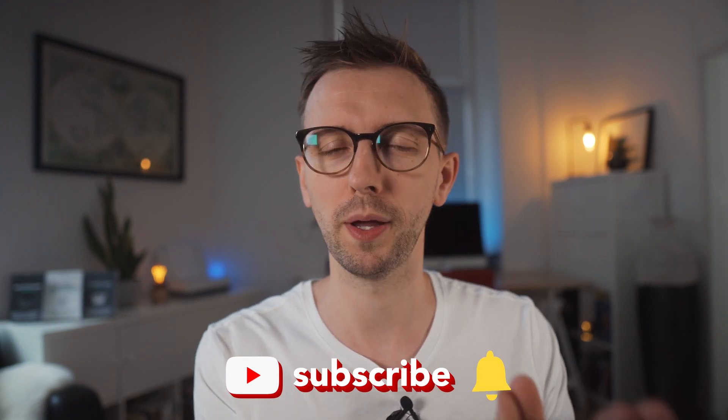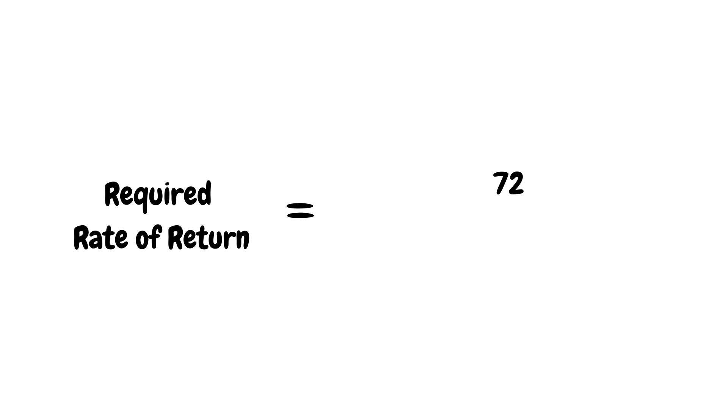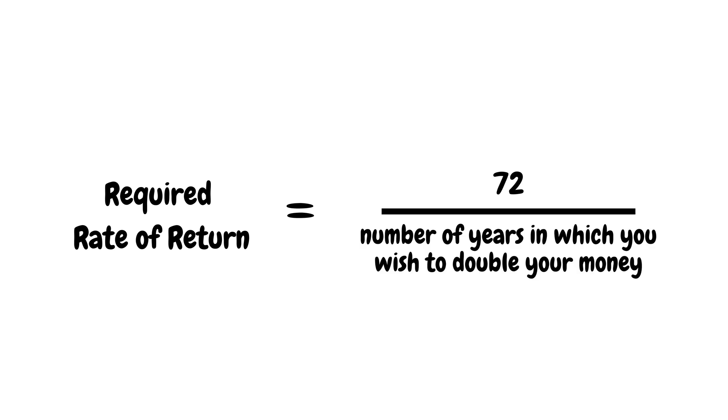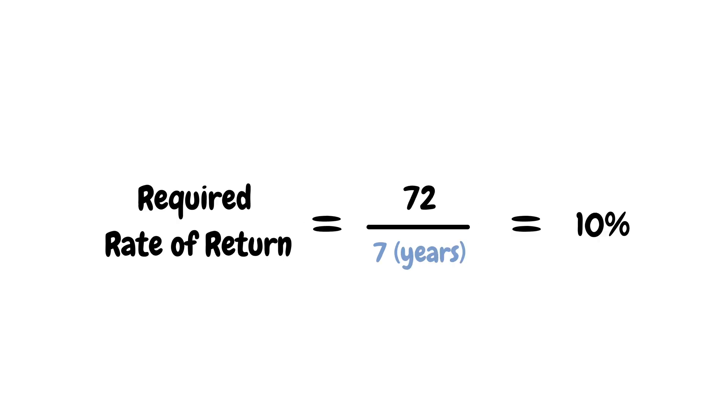Maybe you already knew this rule of thumb, but did you know that the Rule of 72 can also be used in reverse? If you want to double your money in a specific number of years, what kind of return would be required to get there? Simply use the following formula: the required compound annual growth rate to double your investment equals 72 divided by the number of years in which you wish to double your money. So if you want to double your investment in 7 years, you need to earn a return of about 10 percent — 72 divided by 7.